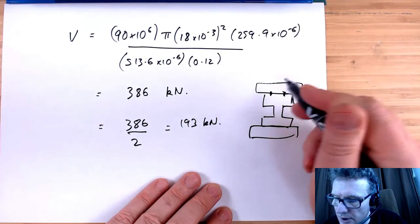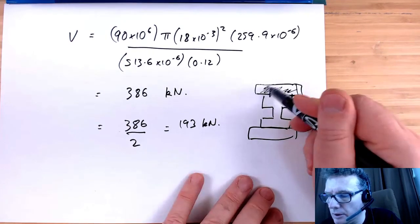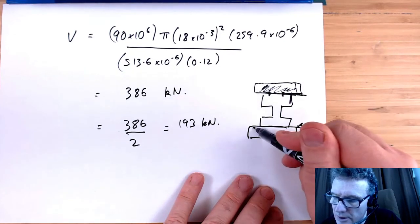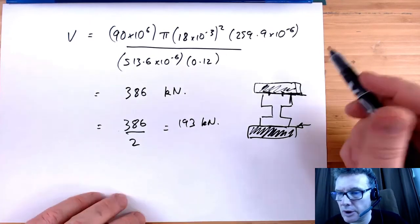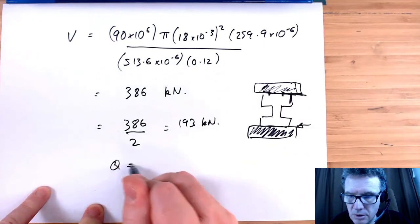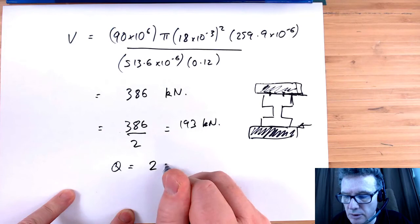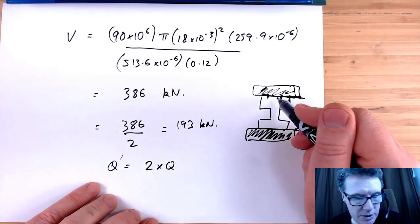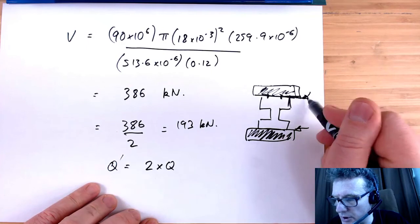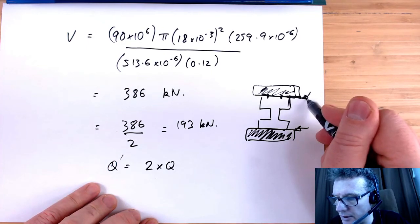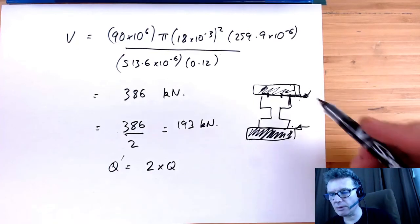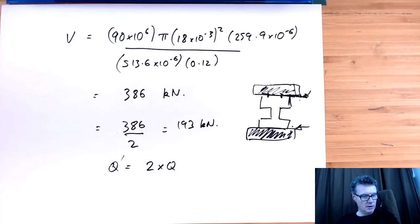The error was in Q. I calculated the shear on one side, but the bolts act on both sides simultaneously. So Q needed to be doubled — we call it Q prime — because the shear flow is happening on both sides of the web. That's why Q needs to be multiplied by 2, accounting for all four bolts.